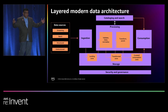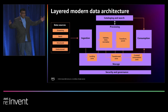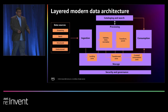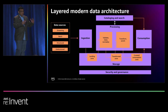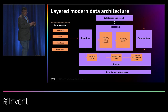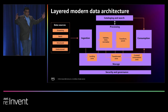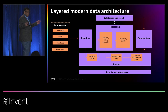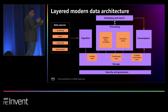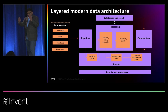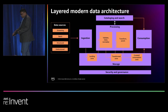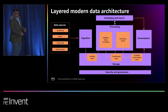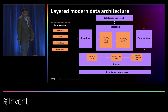If you put all six layers together, this is the layered modern data architecture. There are two main advantages. First, you can build it incrementally. Second, when you make changes to one layer, it doesn't impact other parts of the architecture. The storage layer consists of a landing zone or raw zone to store raw data, a transform zone to store transformed data, and a curated zone for storing enriched data.